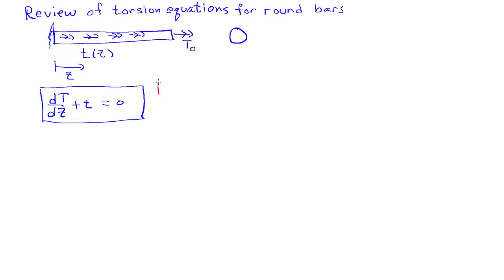So if I take the bar and I make a section cut on it, at some point there's an internal torque T of z, and then on the opposing face also there'll be an internal torque there. And the magnitude of that will also be T of z. So that's the main equilibrium equation.